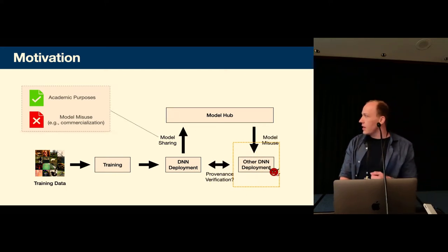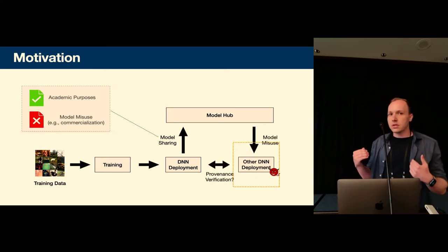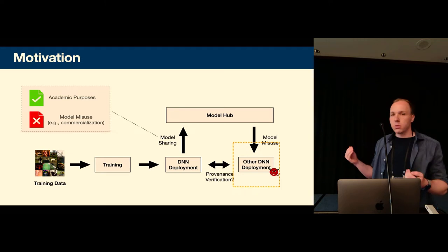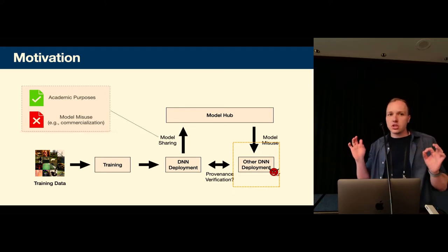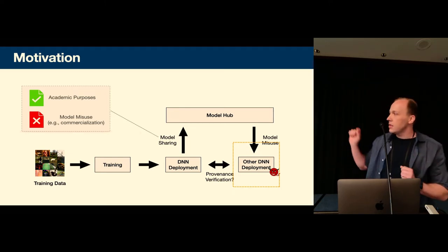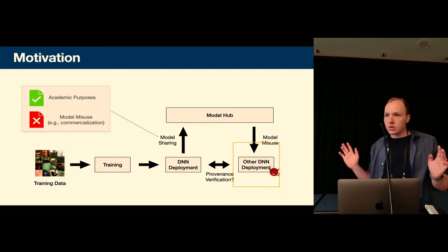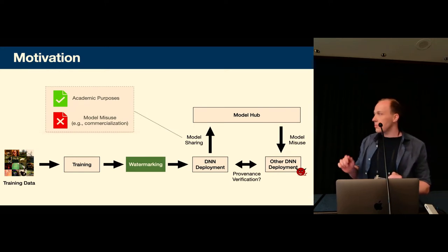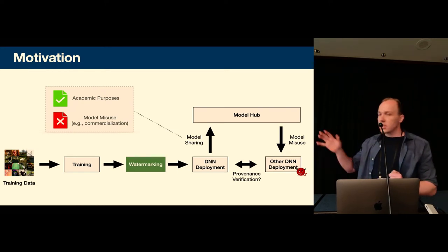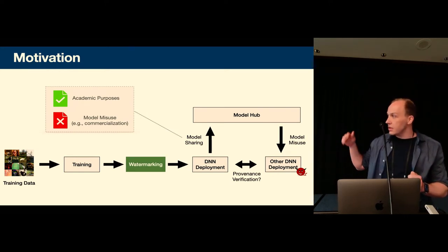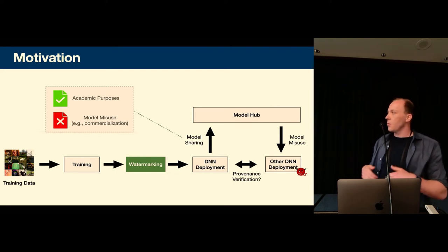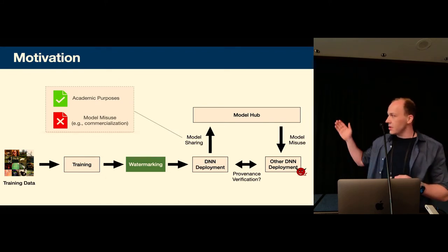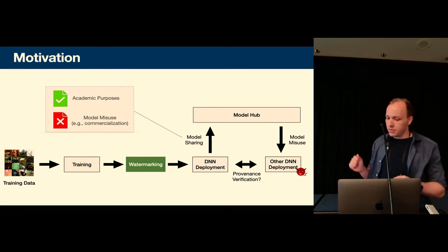One possible defense would be to watermark the model and make it detectable that you used our model you can't do that and this is a faulty service. So if we have an adversary that downloads the model from Model Hub and then deploys it publicly, the question is how can we tell that they used our model. And that question is called provenance verification. This is the question that watermarking seeks to answer. So in watermarking it's an addition to the training process where we embed a message into the trained model that makes it recognizable in the other deployment from the adversary.